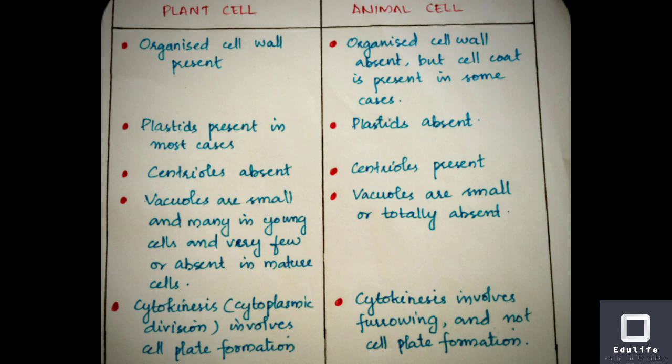Centrioles are present in animal cells but absent in plant cells. Mature plant cells have very large vacuoles.